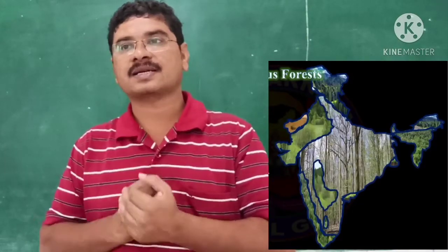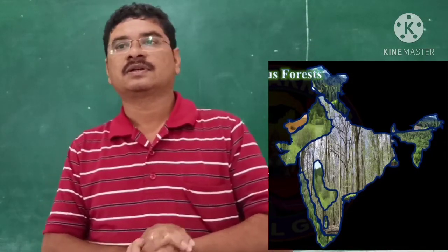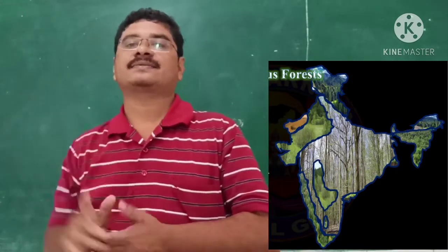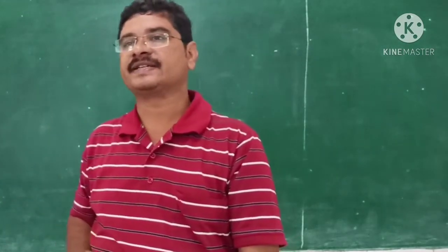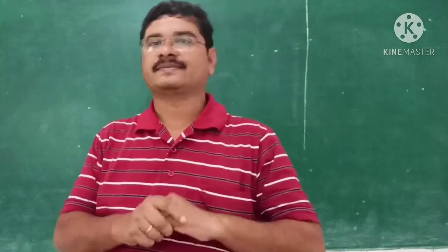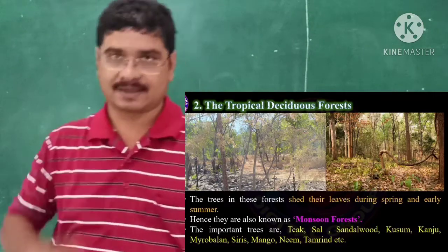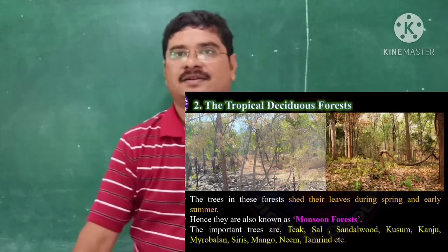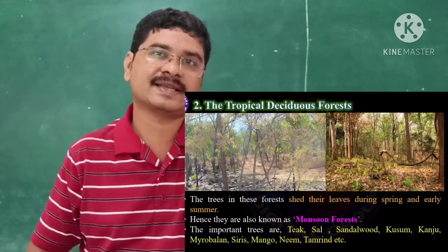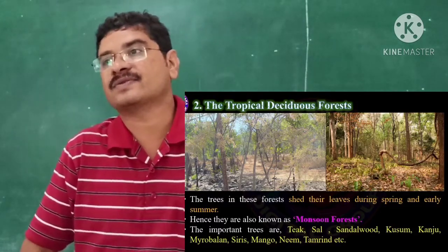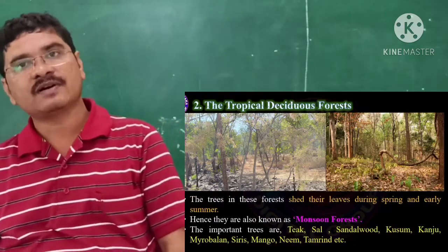Tropical deciduous forests are found in Maharashtra, Karnataka, Kerala, Tamil Nadu, Chhota Nagpur Plateau, foothills of the Himalayas, and some parts of Odisha and West Bengal. The trees in these forests shed their leaves during spring and early summer, hence they are also known as monsoon forests.